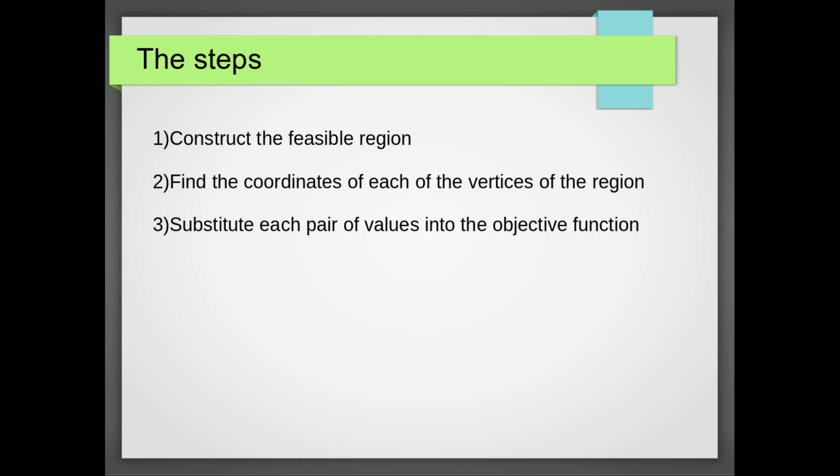We then substitute each of the values that we get from the coordinates of these vertices into our objective function, and then we pick the point that meets the purpose of our objective function. So if it was to maximise the objective function, we take the point that gives us the maximum value, the highest value, and if it's to minimise, we pick the point that takes the lowest value.